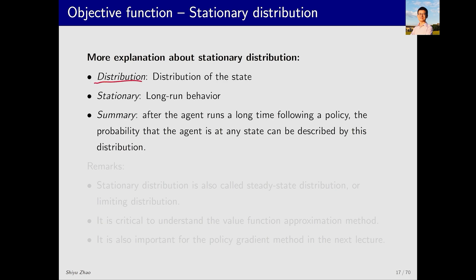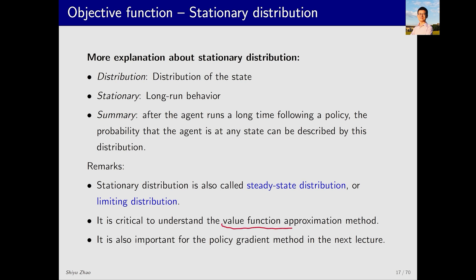Let me elaborate a bit more on stationary distribution. First it's a distribution, a probability distribution of states. If you are calculating a weighted average, you can think of it as the weight of that state. Second, it is called stationary distribution because it represents the probability distribution reached after taking many steps following a specific policy, thereby reaching a stationary status. The stationary distribution is also called steady state distribution or limiting distribution. It is important to define the objective function in value function methods. It is also important in policy gradient methods as we introduce in the next lecture.